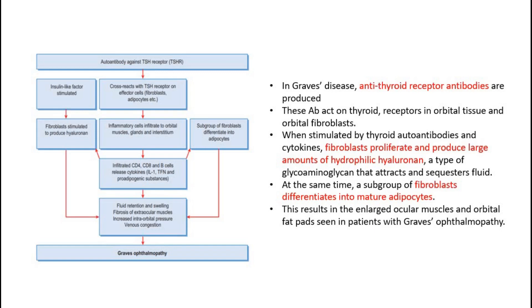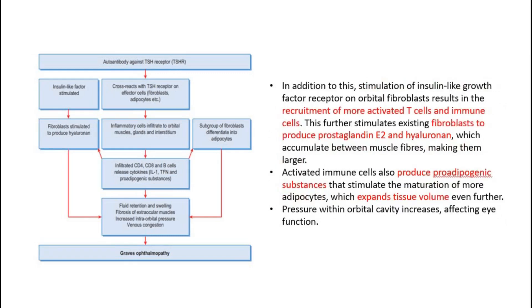At the same time, a subgroup of fibroblasts differentiates into mature adipocytes. This results in enlarged ocular muscles and orbital fat pads seen in patients with Graves' ophthalmopathy. Stimulation of insulin-like growth factor receptor on orbital fibroblasts results in recruitment of more activated T-cells and immune cells, further stimulating fibroblasts to produce prostaglandin E2 and hyaluronan, which accumulate between muscle fibers making them larger. Activated immune cells also produce proadipogenic substances stimulating more adipocytes, expanding tissue volume further, and increasing pressure within the orbital cavity, affecting eye function.